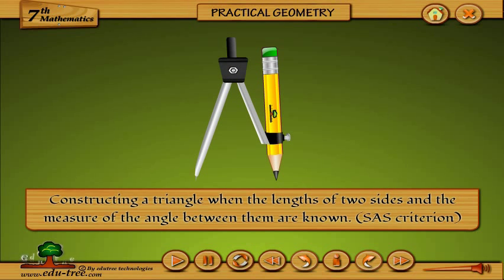Constructing a triangle when the lengths of two sides and the measure of the angle between them are known, by SAS criterion.